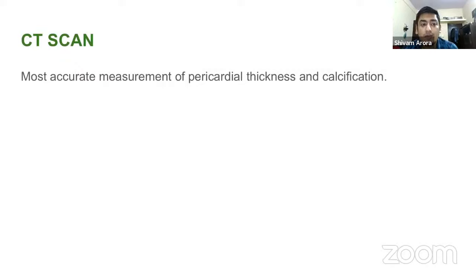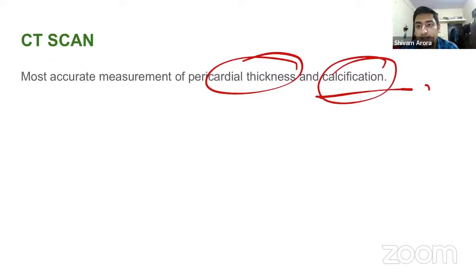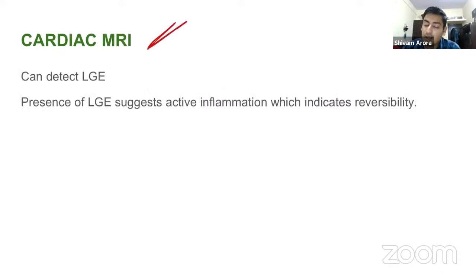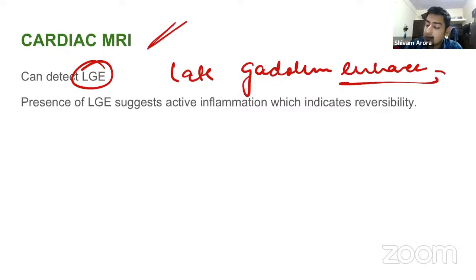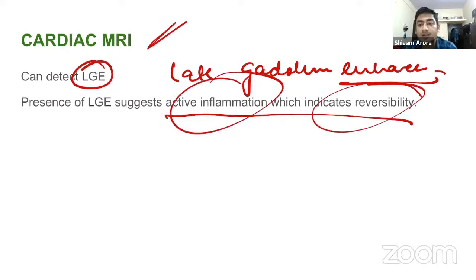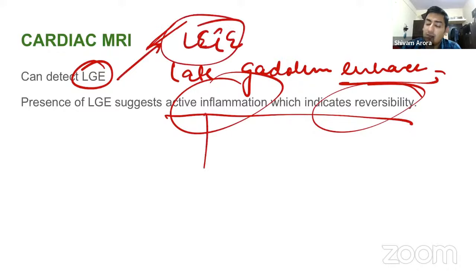CT scan is the most accurate modality for measuring pericardial thickness and calcification. Cardiac MRI can detect late gadolinium enhancement (LGE); the presence of LGE suggests active inflammation is ongoing, indicating reversibility. So if a patient of constrictive pericarditis shows LGE on MRI, steroids can still be given to reverse the process.